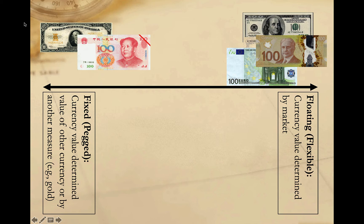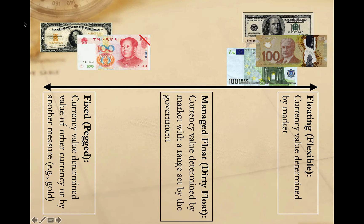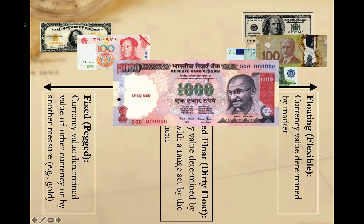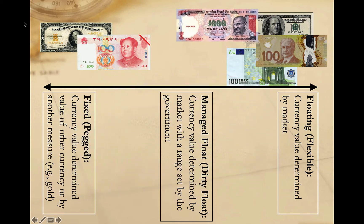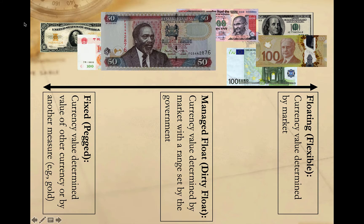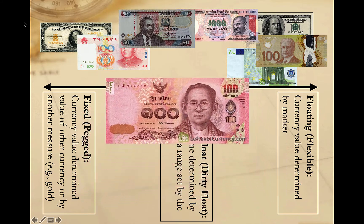Which brings us to the third and final position — the one in the middle — the managed exchange rate system, sometimes called dirty floats. Here, governments set a preferred exchange rate target and attempt to manage currency values as close to that target as possible while still allowing for some market price fluctuations. Today, some 82 countries use managed float systems, making it the most common currency exchange rate system in the world.